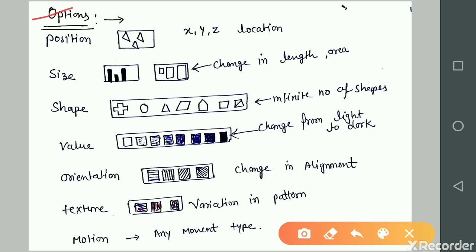First is position. Position represents the position of any object related to the x, y, z plane and location. Next, we have size. In size representation, we have different windows, each with different lengths that cover different areas.